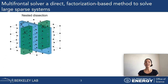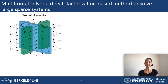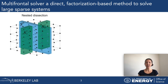Let me start with the basic idea of the multifrontal solver. The figure to the left represents a so-called nested dissection. We can think of all the dots as our data points from the matrix representation of the large sparse system. We use the nested dissection algorithm to reorder the system.